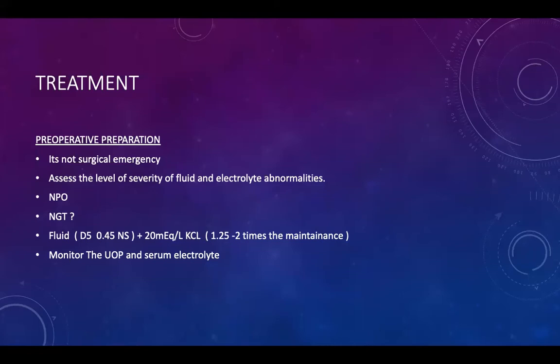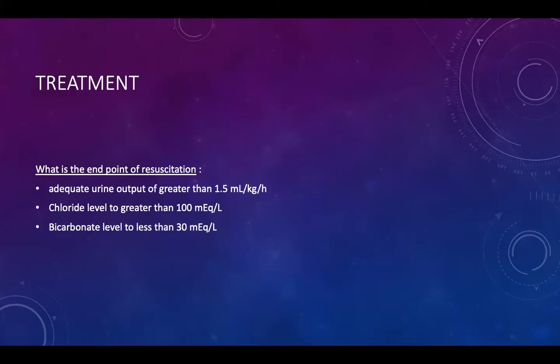Monitor urine output and serum electrolytes. The endpoint of resuscitation — meaning when to take the patient to the OR — is adequate urine output, serum chloride greater than 100 mEq/L, and bicarbonate less than 30. Bicarbonate must be less than 30 because metabolic alkalosis causes alkalosis-induced apnea, which can lead to prolonged intubation and ventilation.